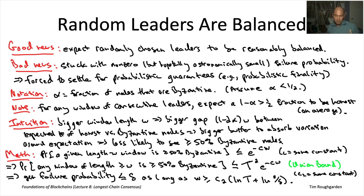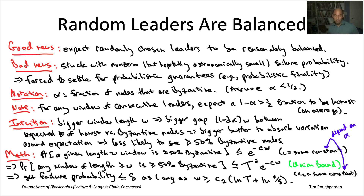The exact value of W depends on capital T, delta, and alpha. As alpha gets closer to 50%, you need to take W bigger. The longer the time period you want to be safe, the bigger W should be. Similarly, the smaller the desired failure probability, the more conservative you should be with W. As a concrete number to keep in mind: W is in maybe the low double figures — somewhere in the dozens. This is important because W also determines how many blocks you must wait before considering a block finalized in longest chain consensus.